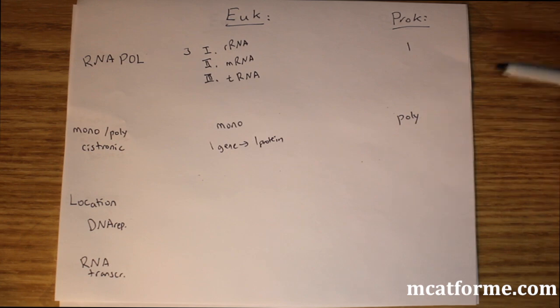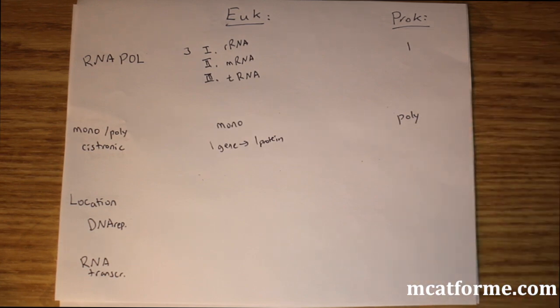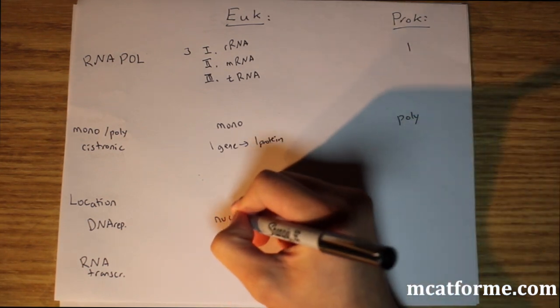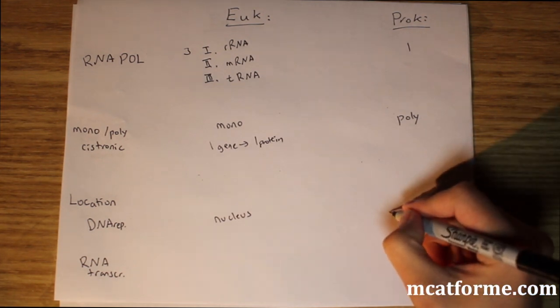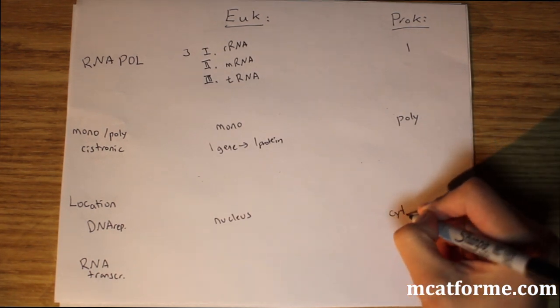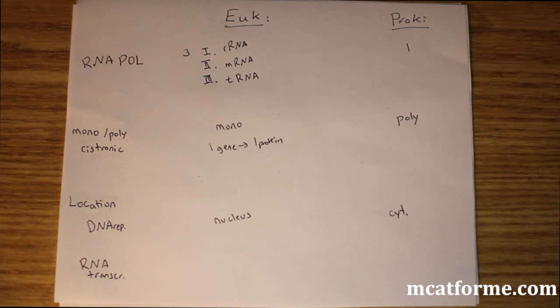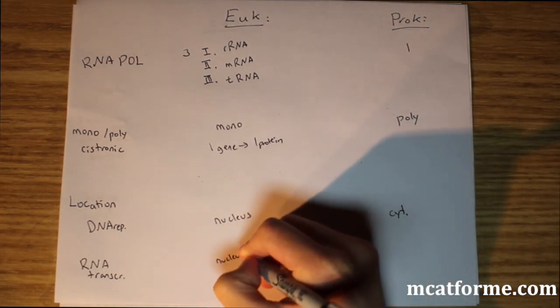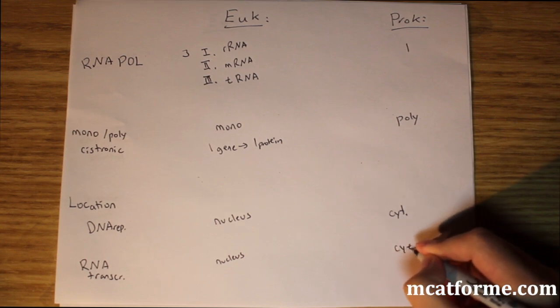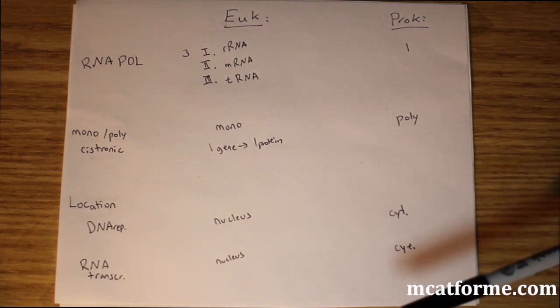Now location. Where does DNA replication occur? In eukaryotes, it's in the nucleus. In prokaryotes, there is no nucleus, so it's in the cytoplasm. Likewise, RNA transcription is in the nucleus for eukaryotes and in the cytoplasm for prokaryotes.